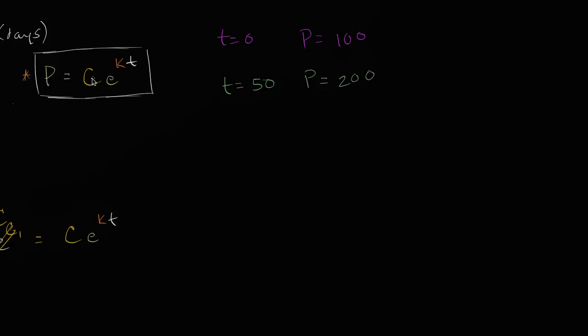So given this information, can we solve for C and K? I encourage you to pause the video and try to work through it on your own. This first initial condition is pretty straightforward to use because when T is equal to zero, P is 100.